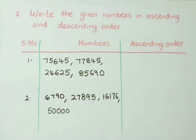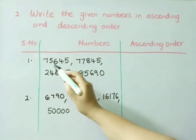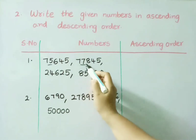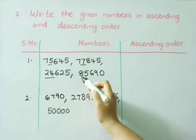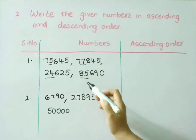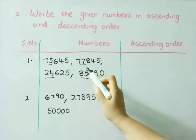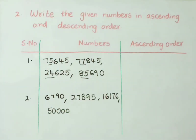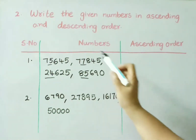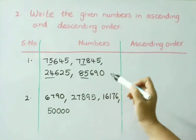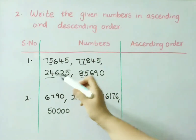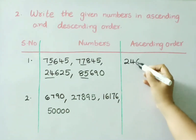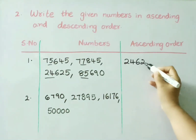Now, let us see the first 2 digits of each number — because here all are 5-digit numbers: 75,000; 77,000; 24,000; 85,000. Among all these 4, which is the least? 24,000 value. So, first write that: 24,625.